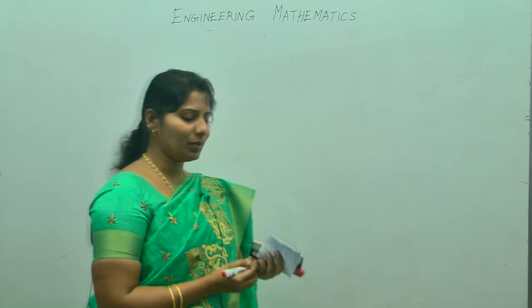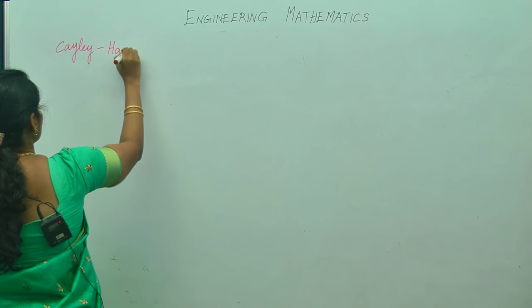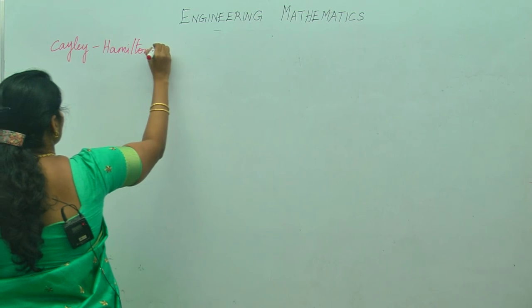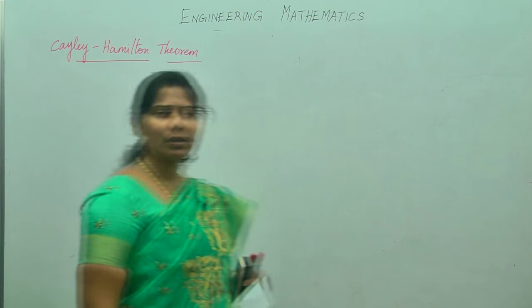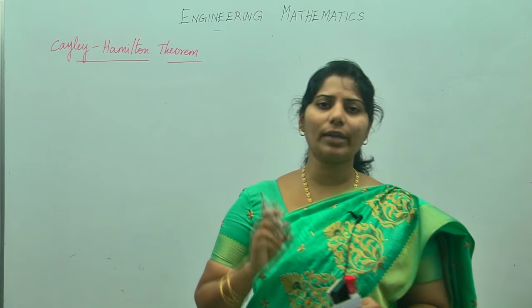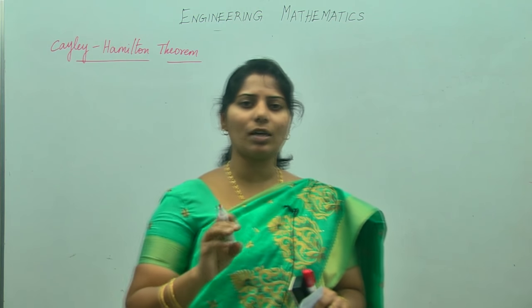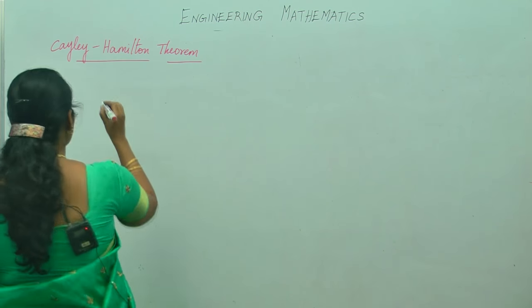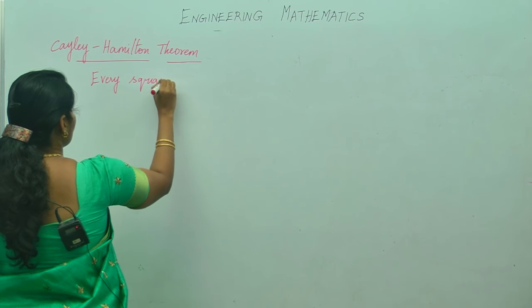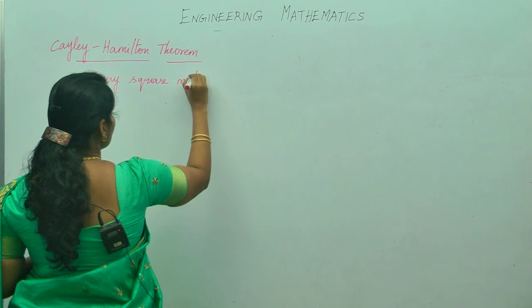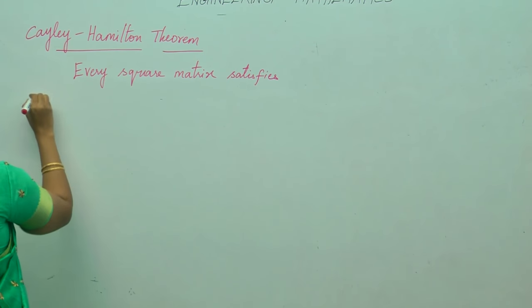I am going to teach you the Cayley-Hamilton theorem. What is the Cayley-Hamilton theorem? Every square matrix should satisfy its own characteristic equation. The word 'satisfies' is very, very important. Even for two marks, they will ask you the statement of the Cayley-Hamilton theorem. Every square matrix satisfies its own characteristic equation.